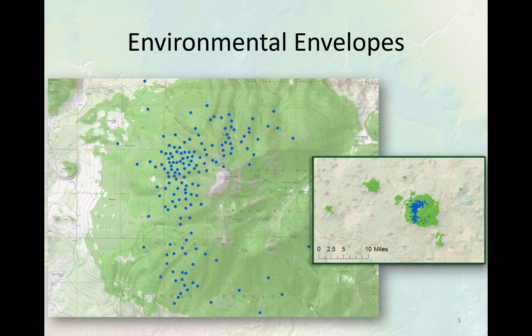The environmental envelope is just all those points on the landscape that lie within this box. When you look at it on the map, we classify every point on the landscape that lies within the minimum and maximum elevation and the minimum and maximum slope — it has to lie between both of those ranges at the same time. And this is what you get. It's a very simple, obvious method.